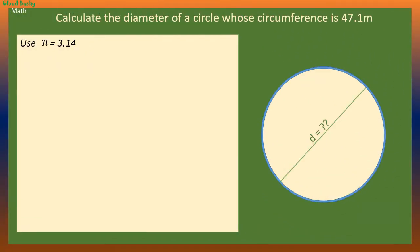Now we want to find the diameter of a circle whose circumference is 47.1 meters. We can use the formula C is pi D. But C is 47.1 meters. This should be equal to pi times diameter.